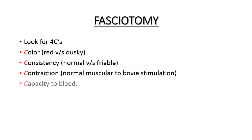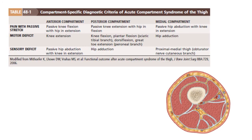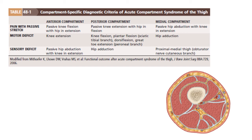While doing fasciotomy, look for the four C's: color of the muscle (red or dusky), consistency (normal or friable), contractility (response to electrical stimulus), and circulation (whether it is bleeding). Sometimes fasciotomy may be done under local anesthesia if an operating room is unavailable — in those cases, complete release of all compartments is essential. The most frequent complication associated with fasciotomy is incomplete release of compartments.